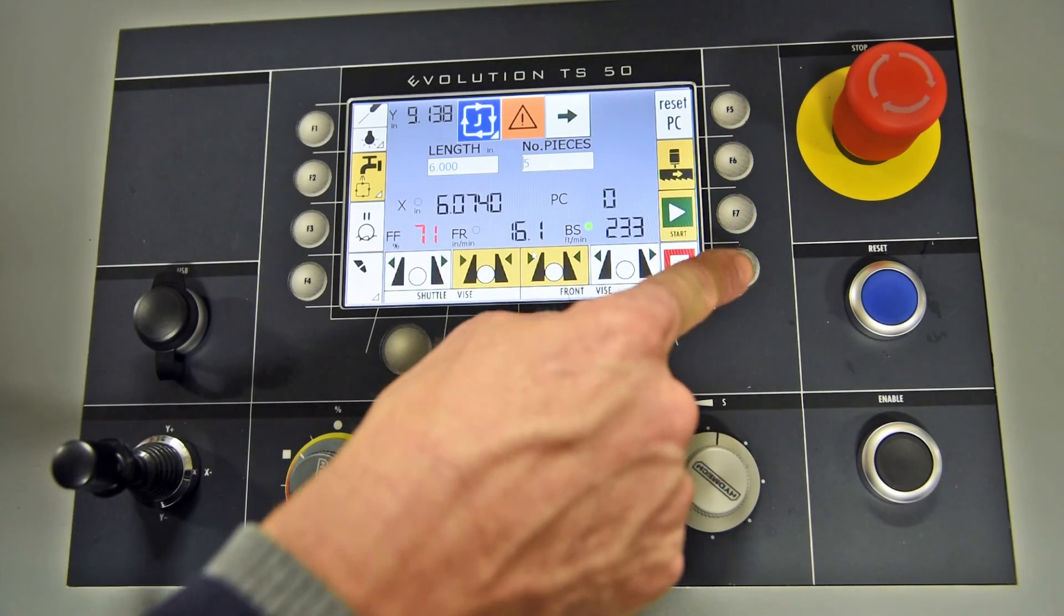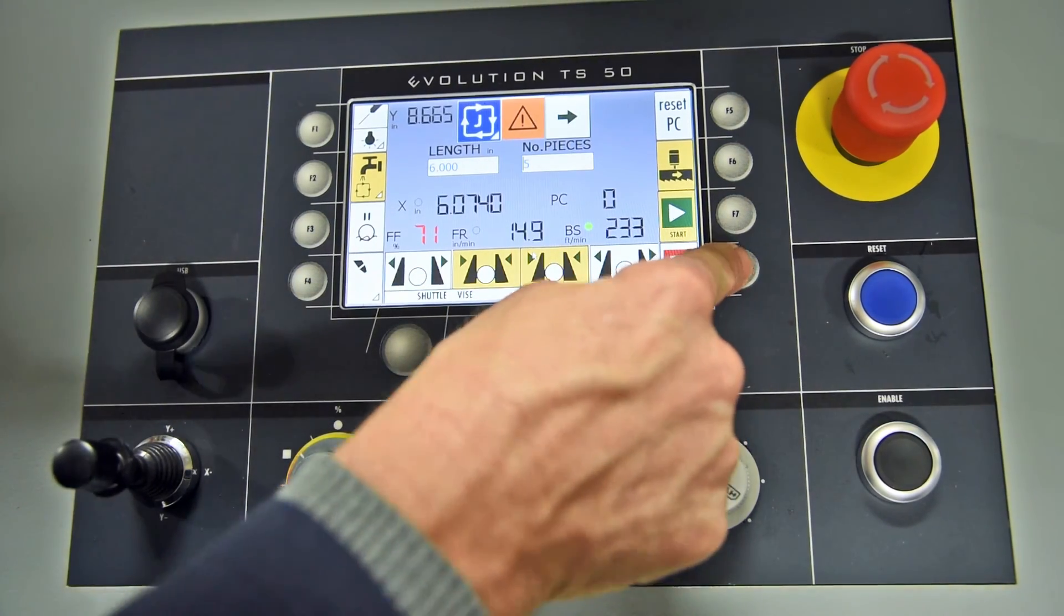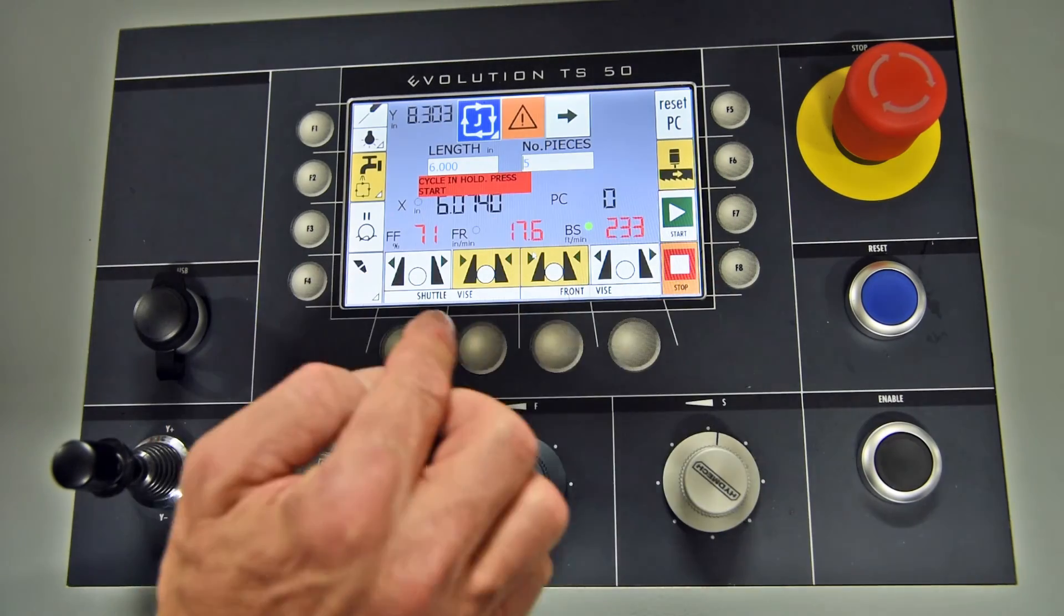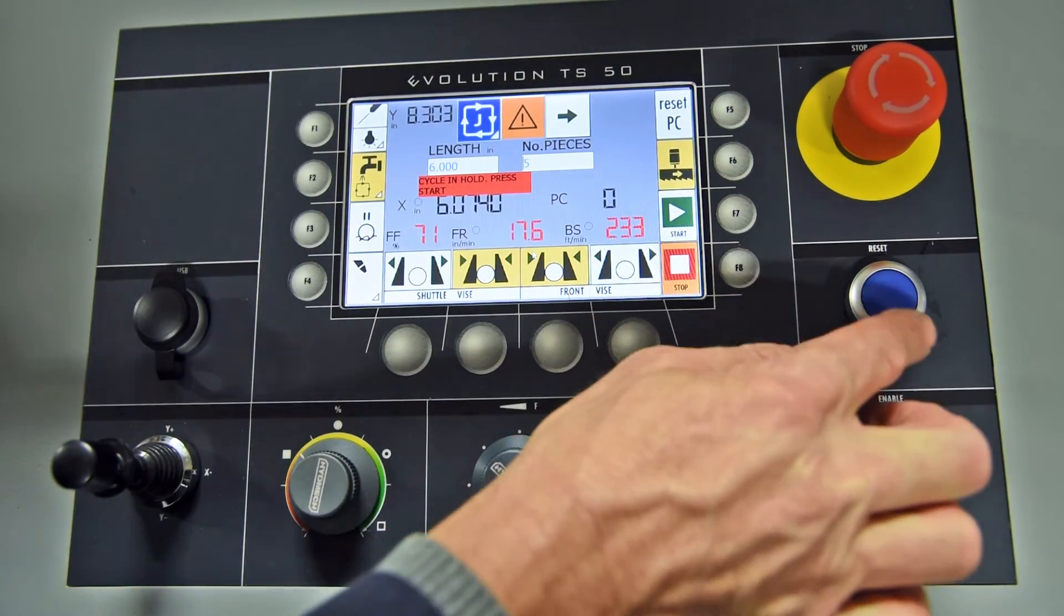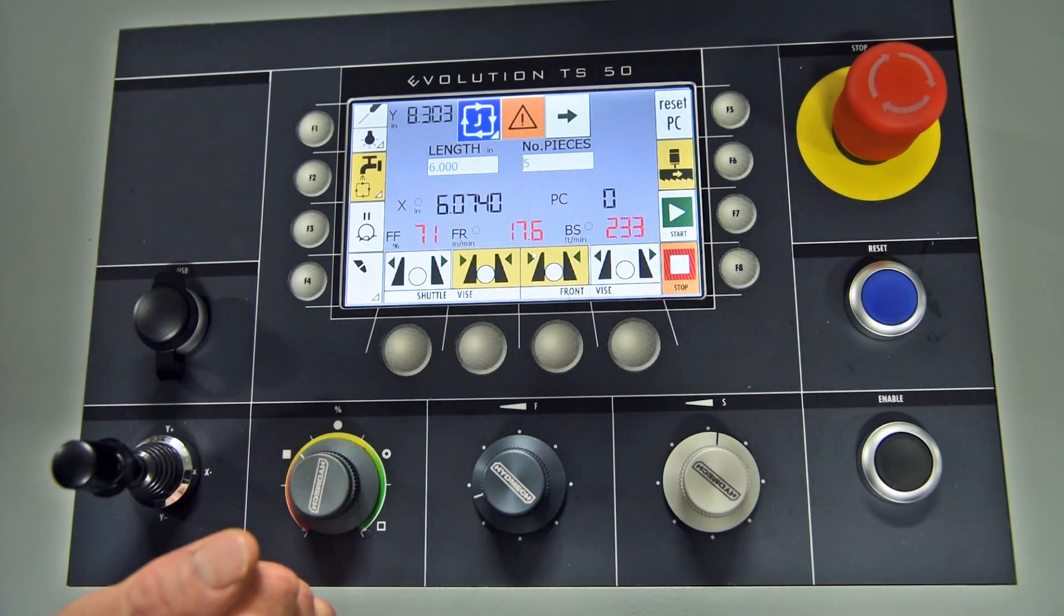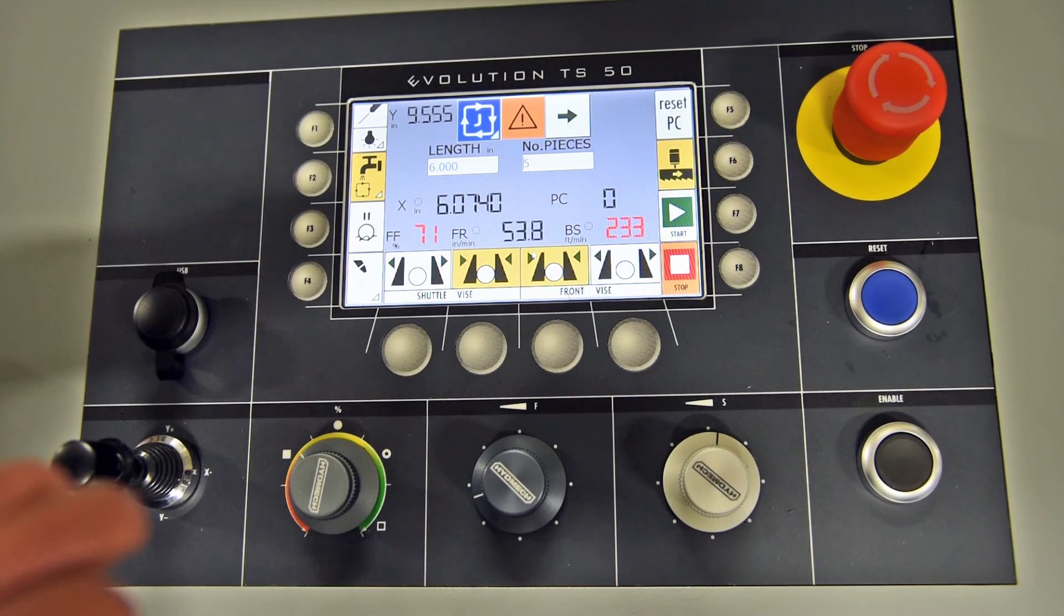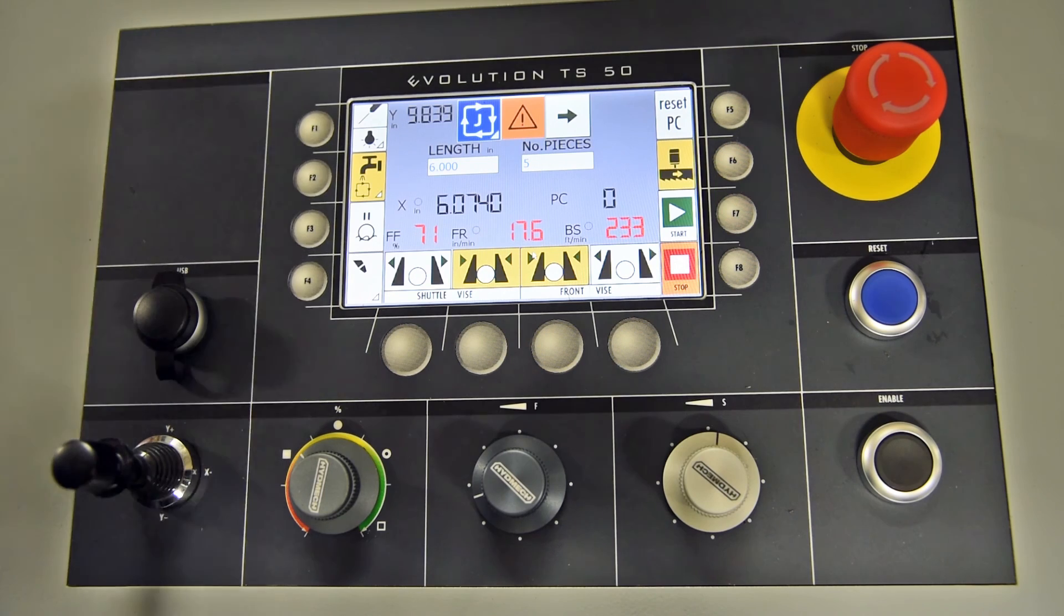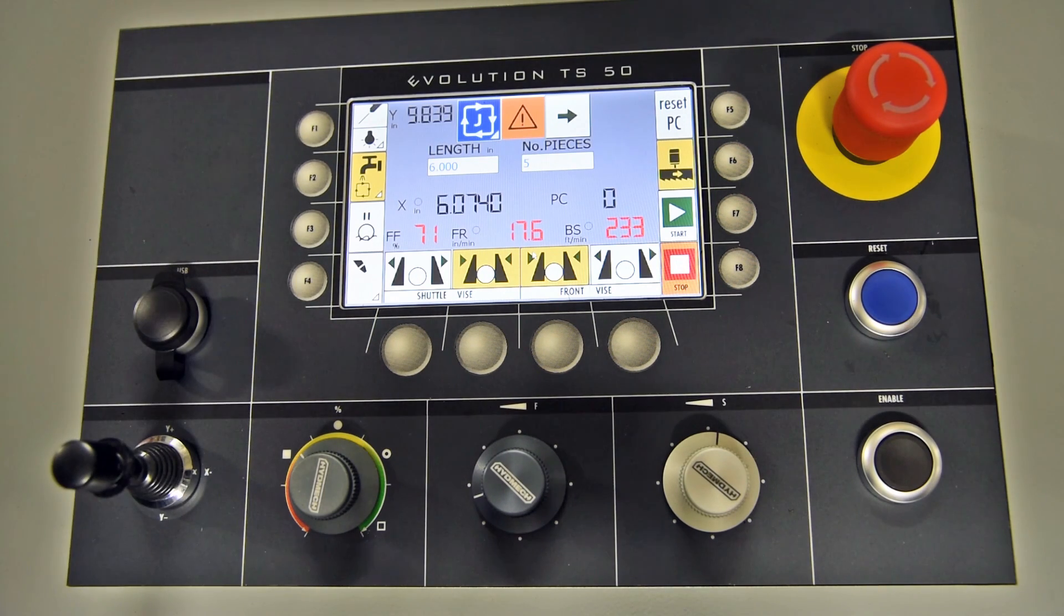If I need for some reason to stop the cycle completely, I would push stop. Stop one more time. Reset. At this point, my head will raise back up to the upper limit and finish. Will not carry on with the cycle. You would have to restart everything again.